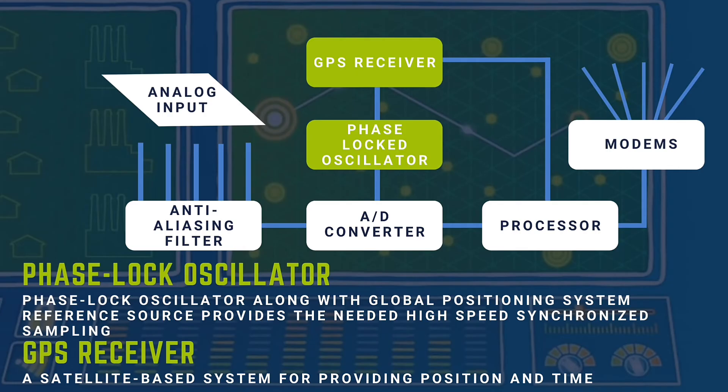Phase lock oscillator: The phase lock oscillator, along with a global positioning system reference source, provides the needed high-speed synchronized sampling. GPS is a satellite-based system for providing position and time.